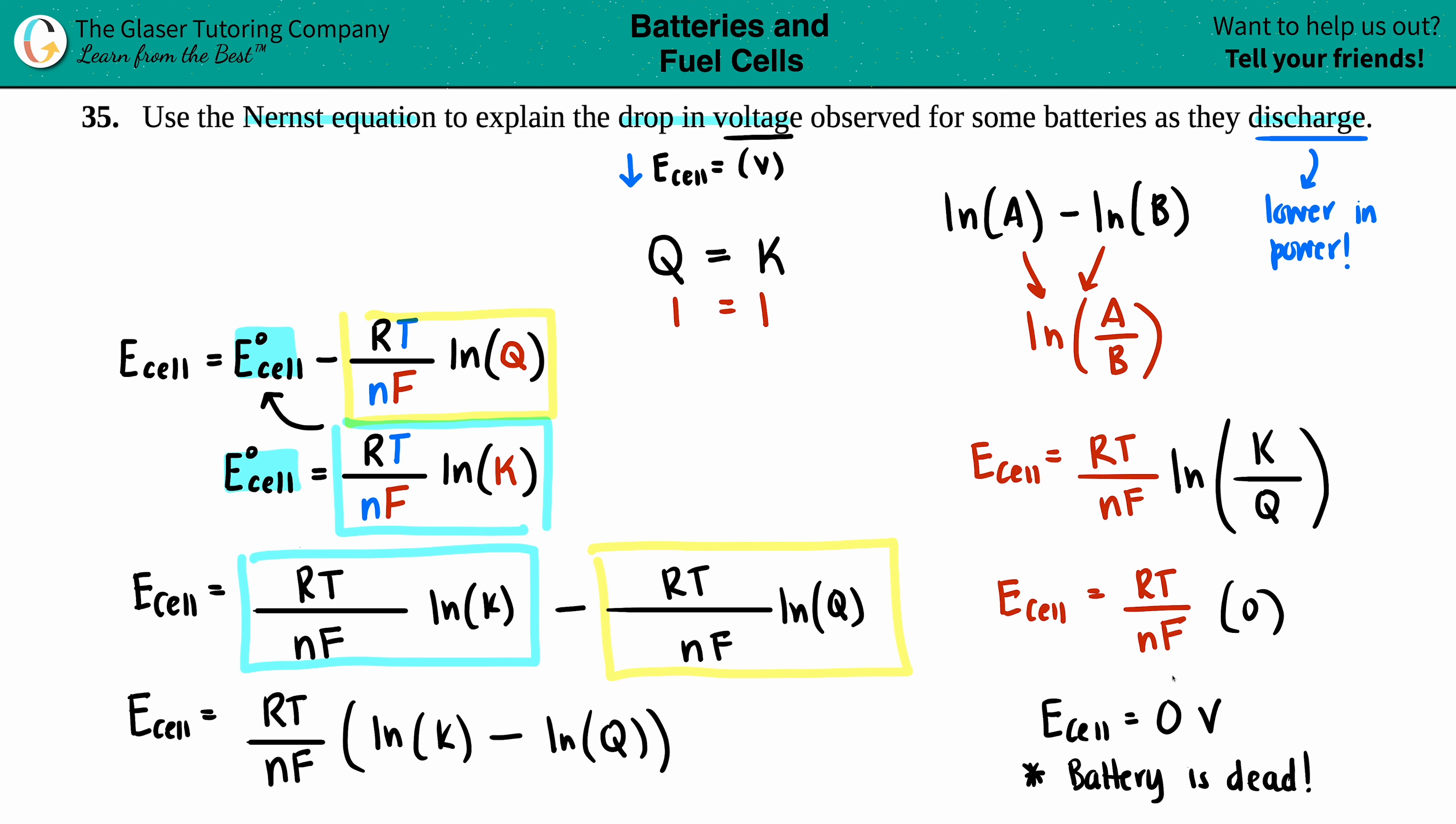And that basically answers the question of how we use the Nernst equation to show the drop in voltage. We showed the extreme case of a completely dead battery. But basically, your Q value is just coming very close to K over time, and when it equals K, that means your battery's dead.